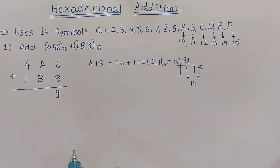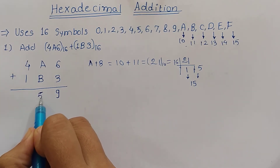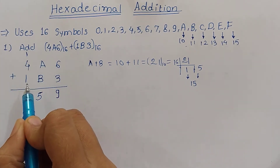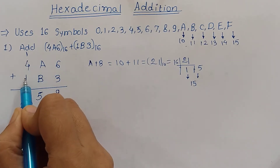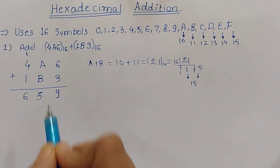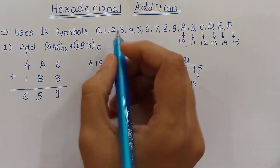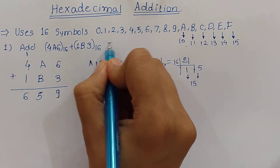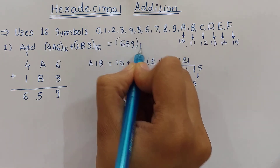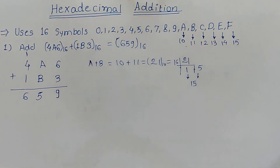We write 5 and the carry 1 is carried to the next digit position. Now 4 plus 1 plus 1 is 6, and we write 6 as it is. So the result of this addition is 659 hexadecimal.